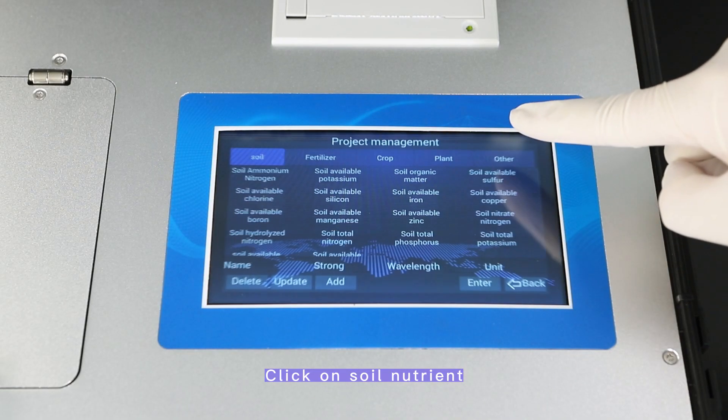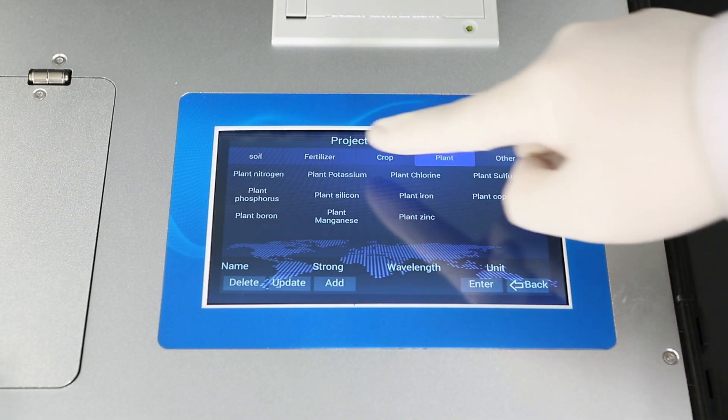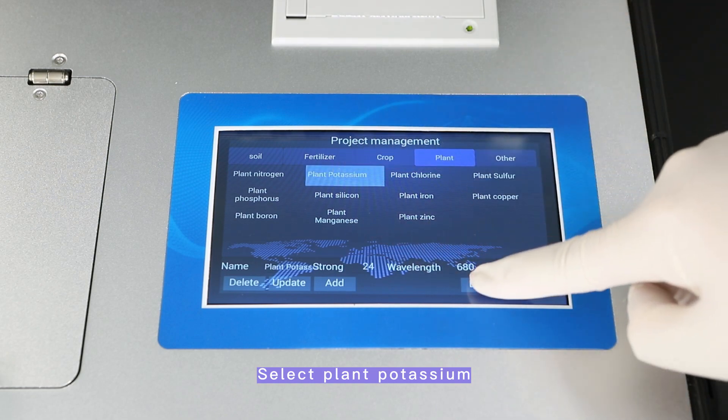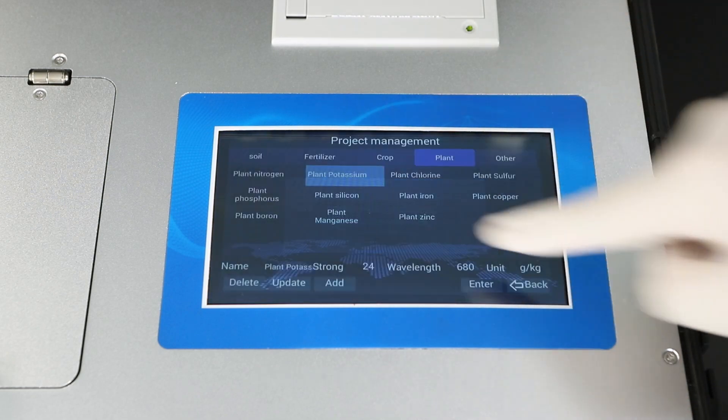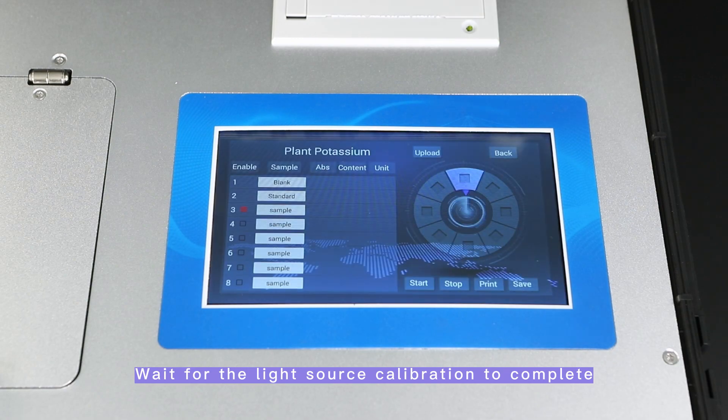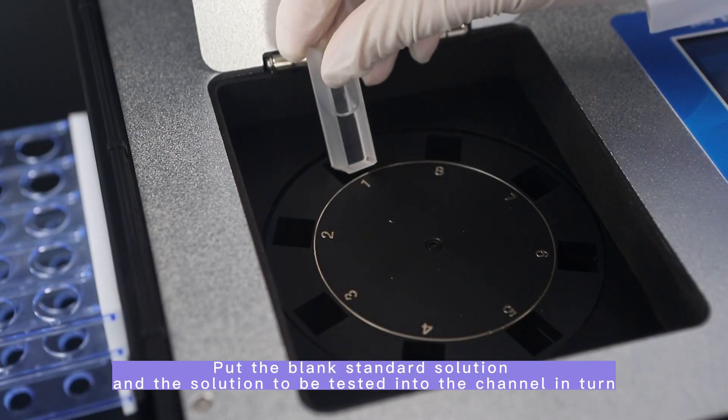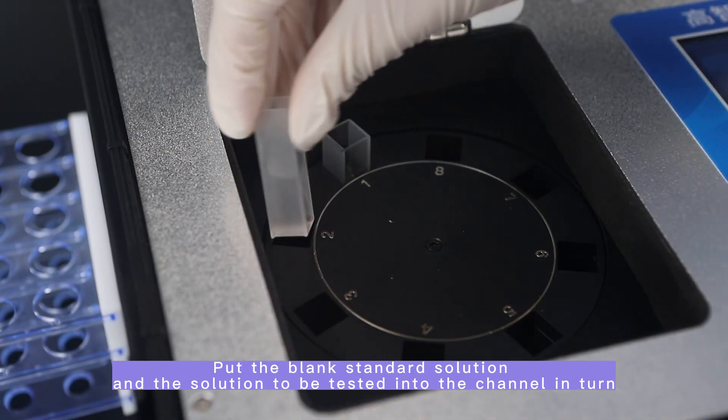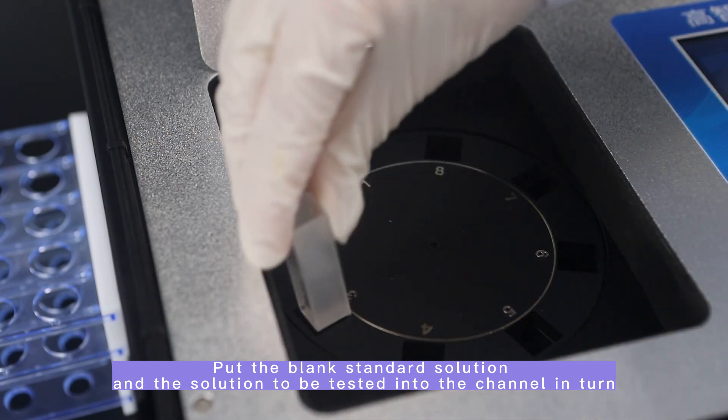Click on soil nutrient. Select plant potassium. Wait for the light source calibration to complete. Put the blank standard solution and the solution to be tested into the channel in turn.